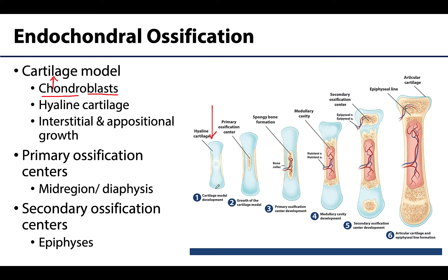This cartilage model is going to be composed of hyaline cartilage. The cool thing is that this cartilage model will actually grow through both interstitial growth, or growth from within, which results in the cartilage model growing in length, as well as appositional growth, meaning growth of the outer surface, so the cartilage model also grows in width. Eventually there will be the development of the primary ossification center. We talked about ossification centers with intramembranous ossification, and this also occurs with endochondral ossification. But since many of the bones being formed here are long bones, which will have a diaphysis and epiphyses, there will be multiple ossification centers.